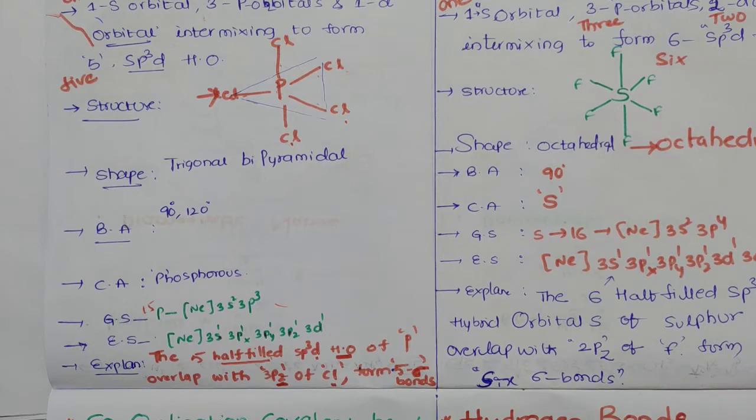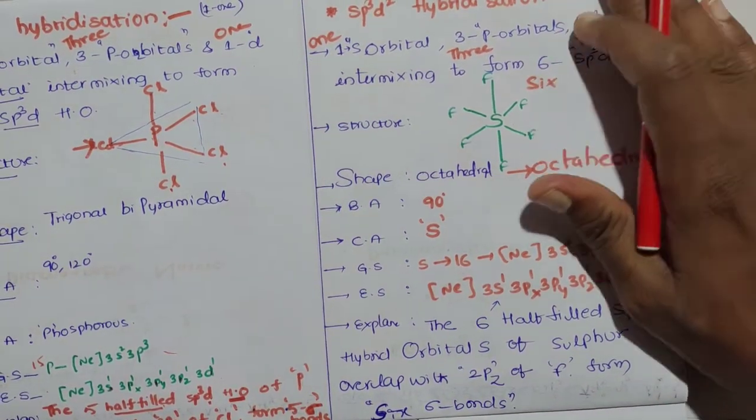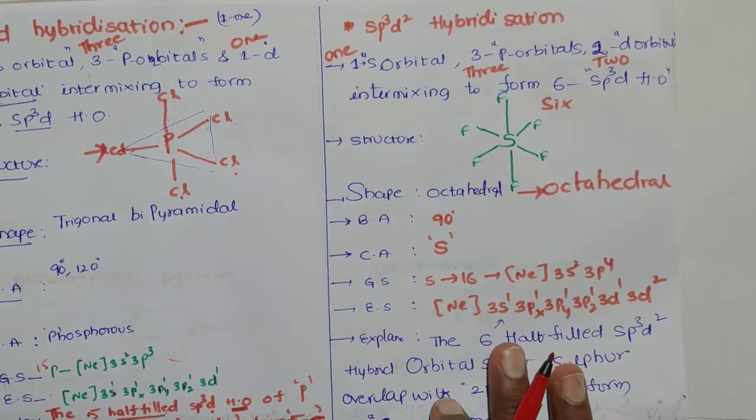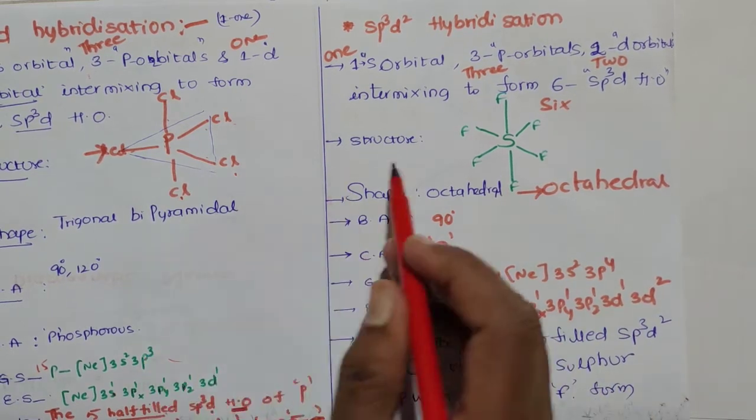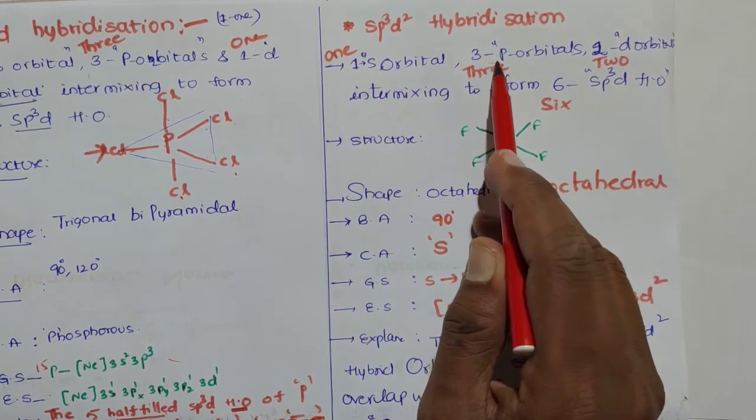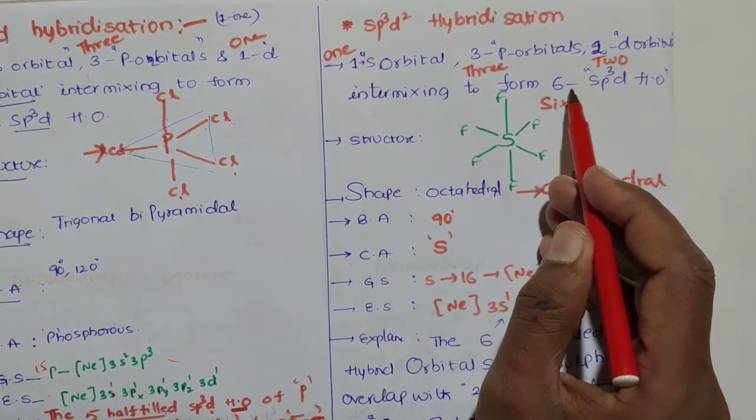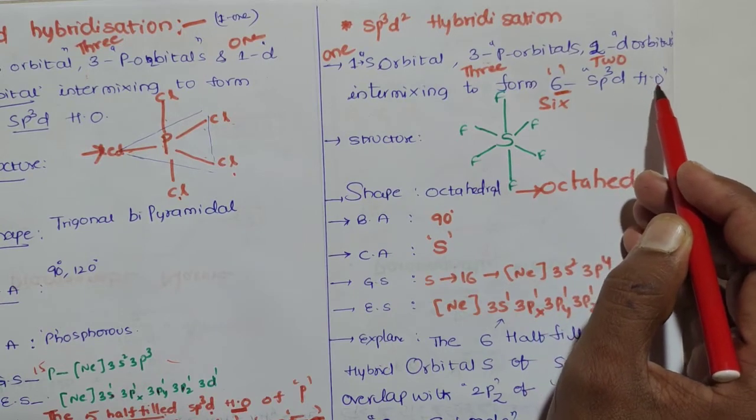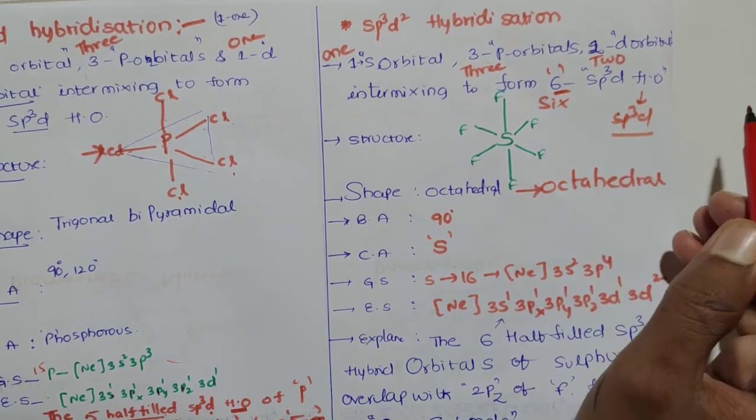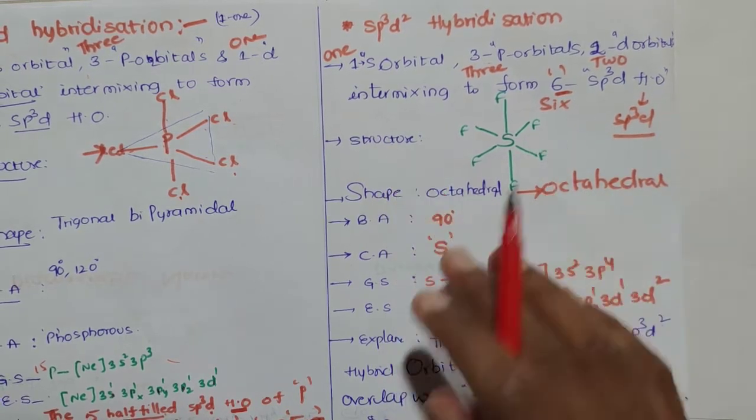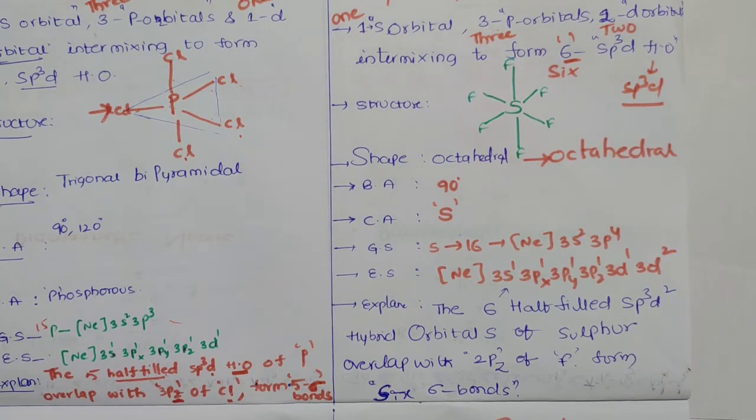This is your notes and I am moving to next, that is sp³d². This is another four marks important question and very easy, same like this only. One s orbital, three p orbitals, two d orbitals intermix to give six sp³d² hybrid orbitals. This process is called sp³d² hybridization.